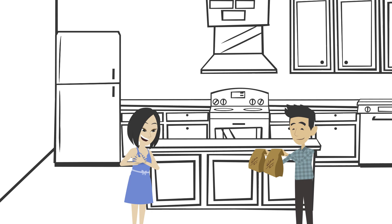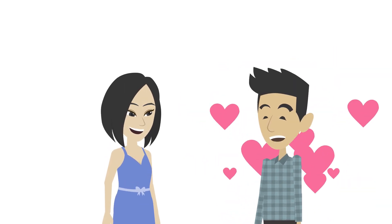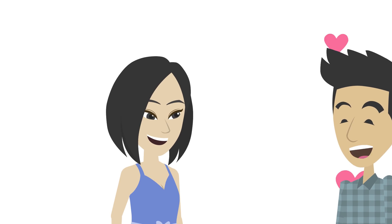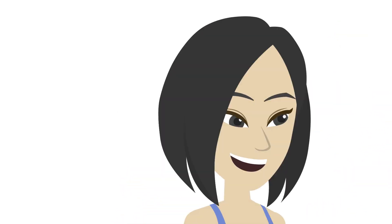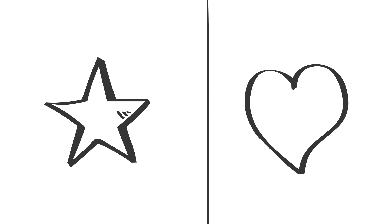You can also surprise your partner with little gestures like leaving a sweet note, bringing them their favorite snack, or planning a special date night. Another way to show appreciation is to give compliments and express gratitude. Let your partner know that you appreciate everything they do for you and how much they mean to you. It could be something as simple as complimenting their outfit or thanking them for doing the dishes. Ultimately, showing appreciation and affection is about making your partner feel valued and loved.